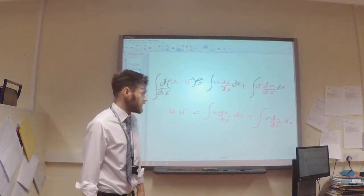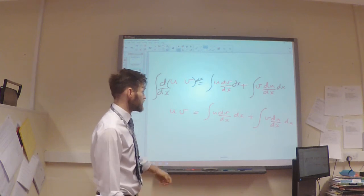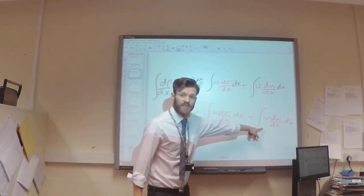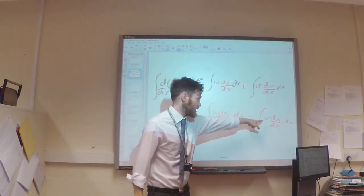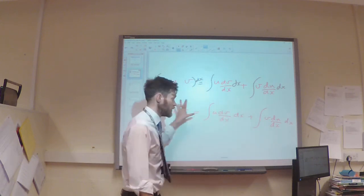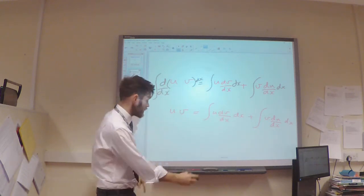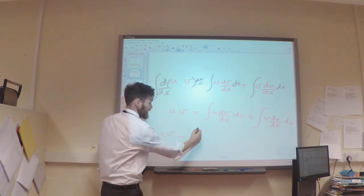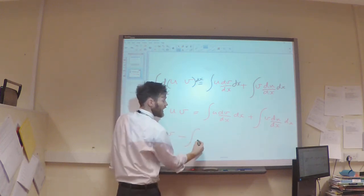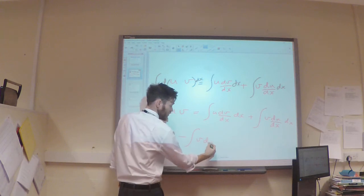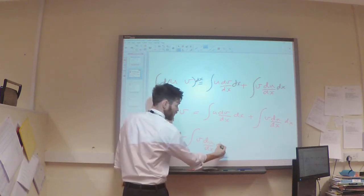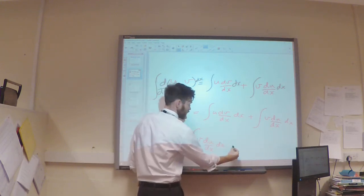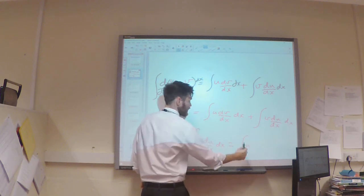The only other thing I'm going to do here is subtract this integral from both sides. I'm going to take this away from the right hand side and move it over to the left hand side. So I'll be left with uv take away the integral of v du by dx with respect to x, and that's going to give me this integral.